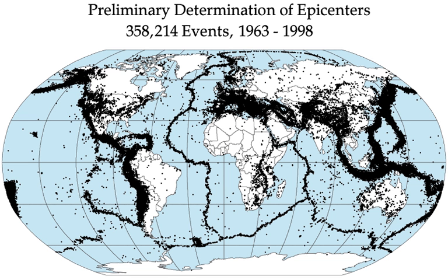Earthquakes, along with severe storms, volcanic activity, coastal wave attack, and wildfires, can produce slope instability leading to landslides, a major geological hazard. Landslide danger may persist while emergency personnel are attempting rescue.